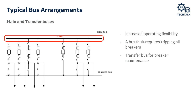The main and transfer bus scheme has a transfer bus where normally all loads and sources are connected from the main bus. If a fault occurs on the main bus or a bus outage is needed, loads and sources can be quickly restored by transferring to the transfer bus. Also, if a breaker needs to go out for maintenance, that load can be transferred to the transfer bus using the bus tie as the breaker for that load, offering really good flexibility for outages and maintenance.